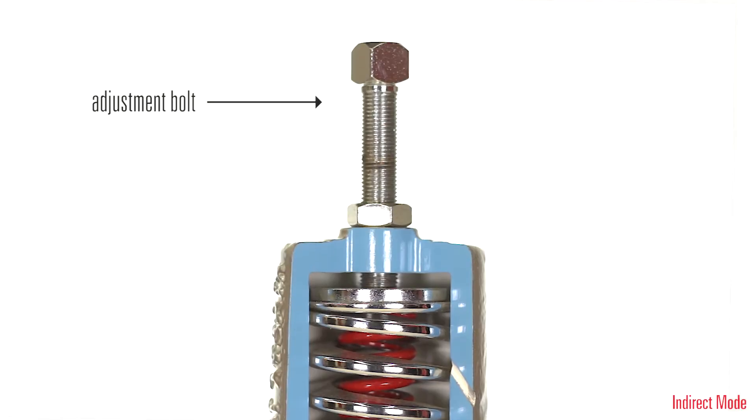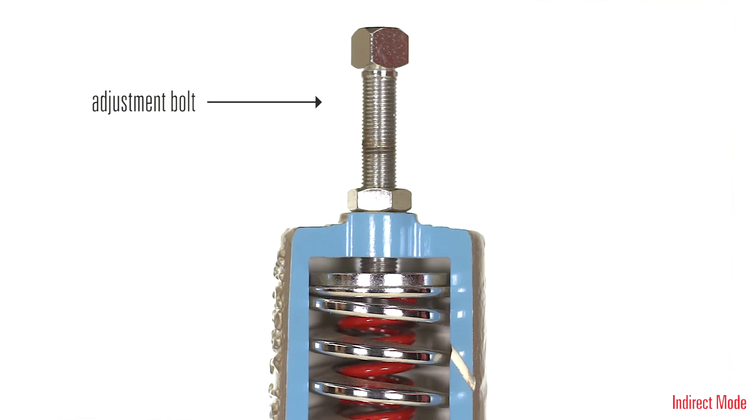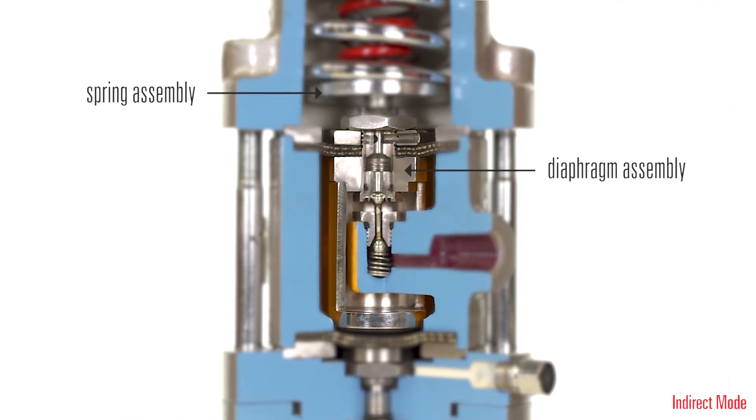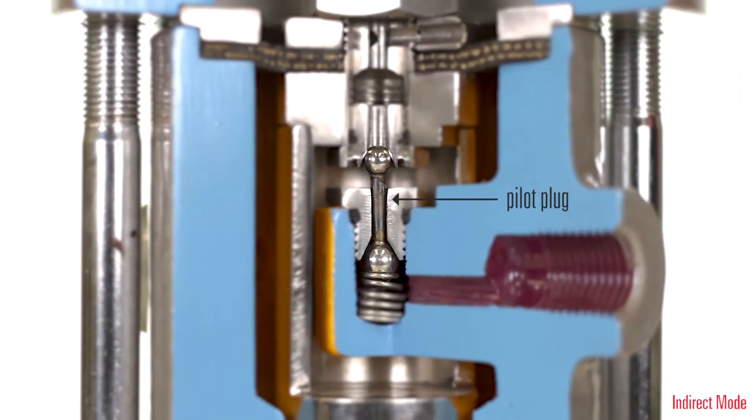The adjustment bolt on top is used to create the set point. As it is tightened, the spring assembly presses down on the diaphragm assembly and positions the pilot plug.